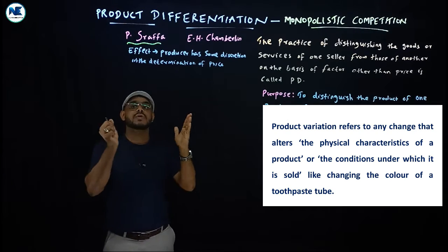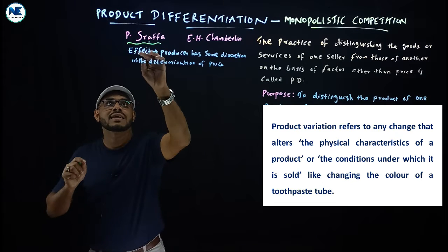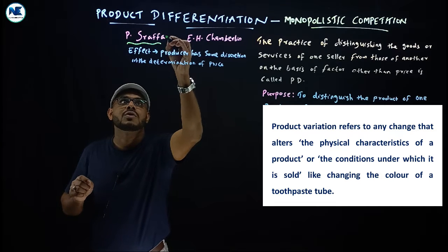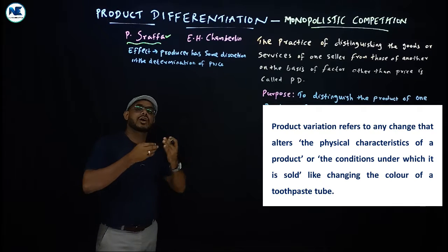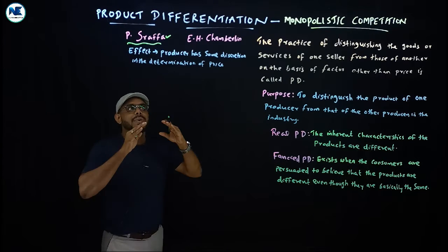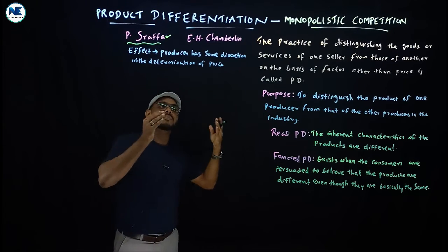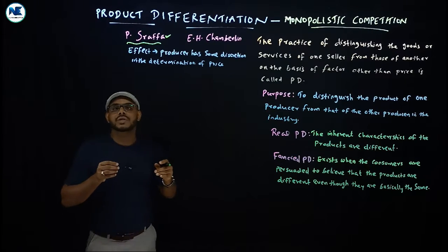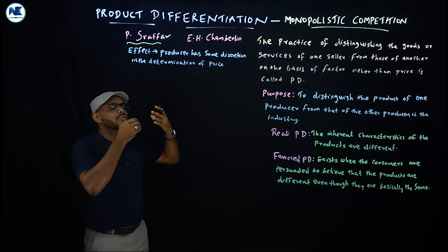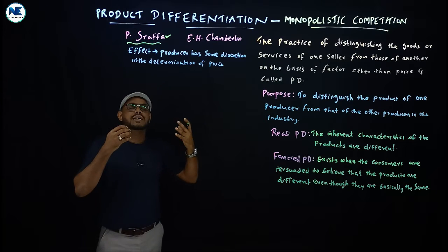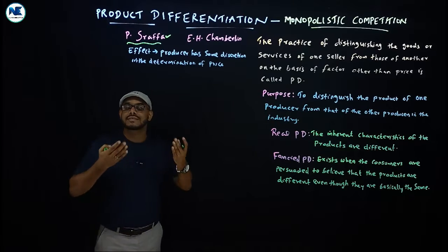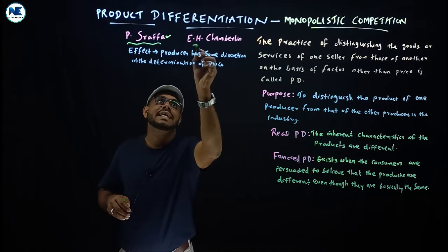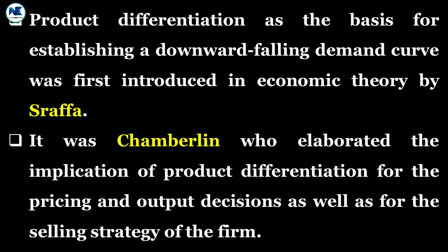We need to remember two names of economists here. First is Sraffa, an Italian economist, who first introduced the concept of product differentiation in economic theory. The other is E.H. Chamberlin, an American economist, known for his book 'Theory of Monopolistic Competition,' who elaborately explained the implications of product differentiation including price-output determination.